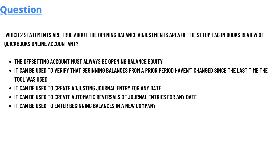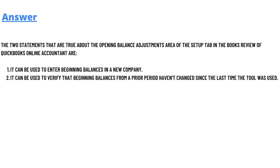Option A: the offsetting account must always be opening balance equity. Option B: it can be used to verify the beginning balance from a prior period haven't changed since the last time the tool was used. Option C: it can be used to create adjusting journal entries for any date. Option D: it can be used to create automatic reversals of journal entries for any date. Option E: it can be used to enter beginning balance in a new company.